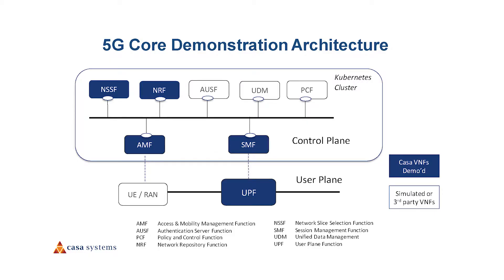Now let's move on to the demo itself and look at the setup. The diagram shows key VNFs in the 5G core architecture. As you can see, there's a separation of the control and user plane, which was first introduced with 4G CUPS — and you can see that in another CASA video demo. This separation allows for flexible geographic location of the VNFs. For example, the user plane VNF could be located at the edge of the network for low-latency applications.